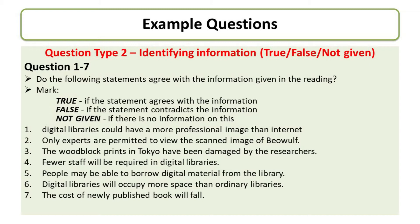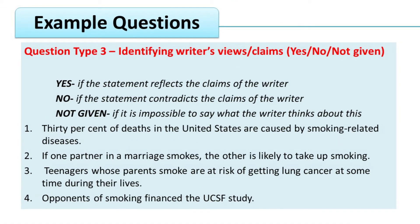Question type three is quite similar to question type two. While question two was True/False/Not Given, question three is Yes/No/Not Given. This question is about finding the opinion of the writer. The writer has given different opinions in the text, and your job is to decide if that same opinion has been given. If it matches, say Yes; if opposite, say No; if it cannot be found, say Not Given.